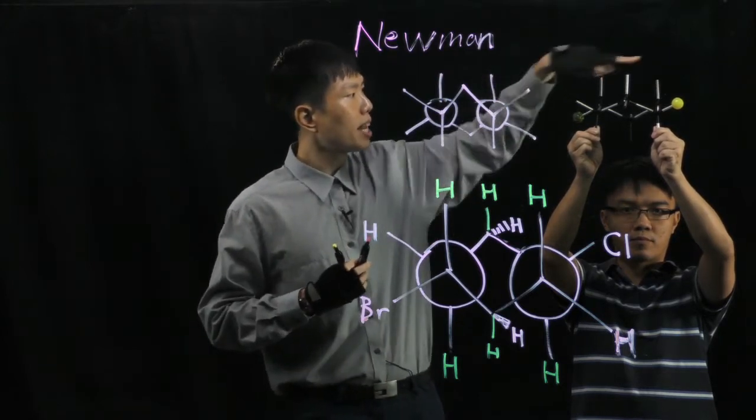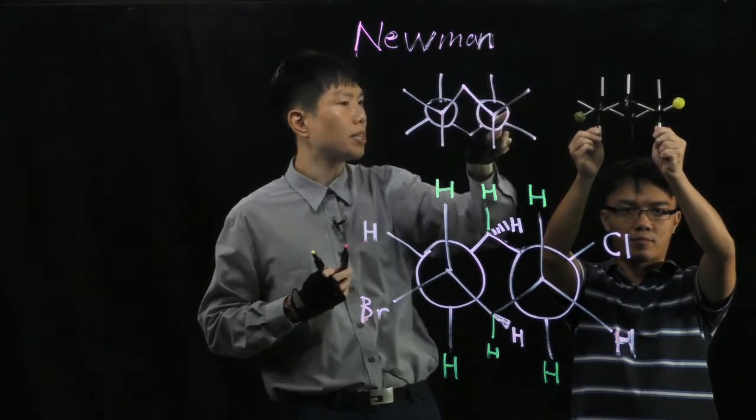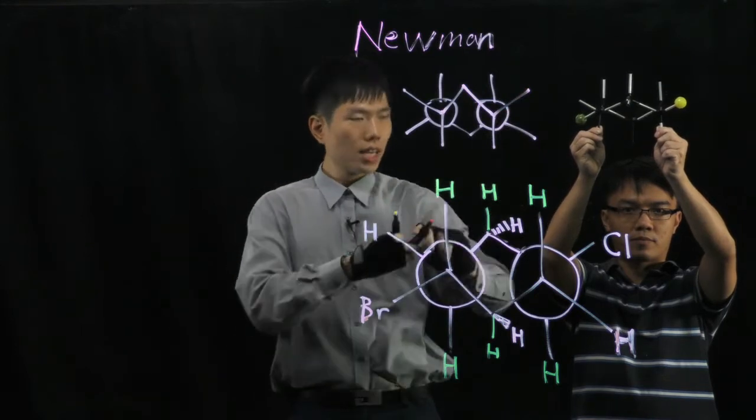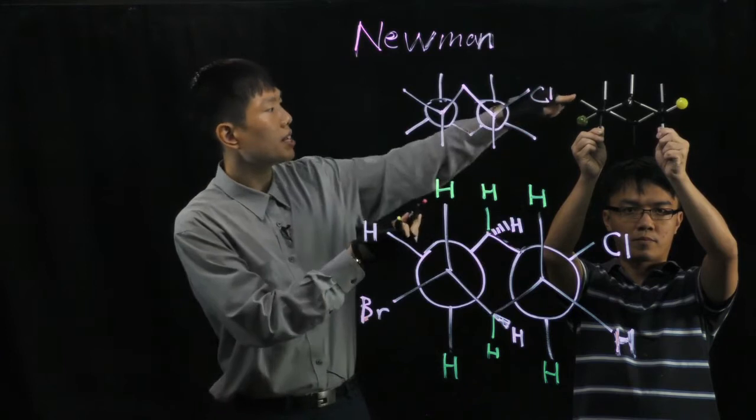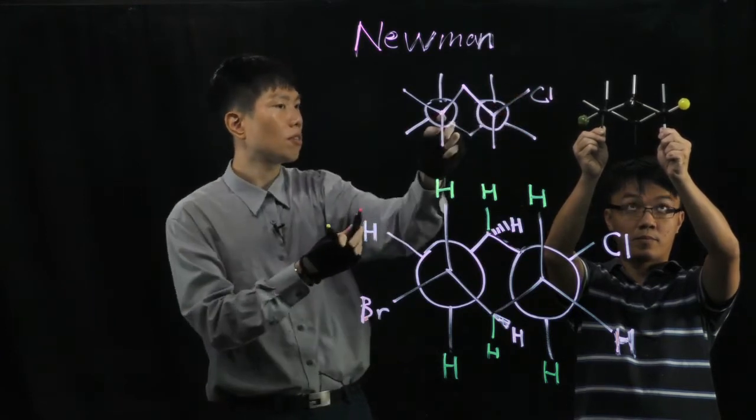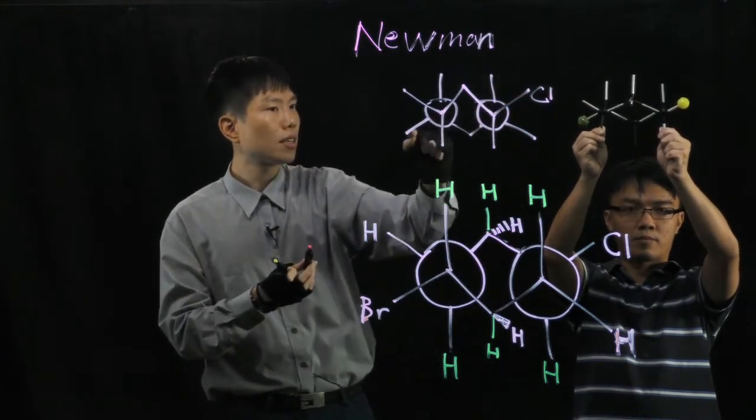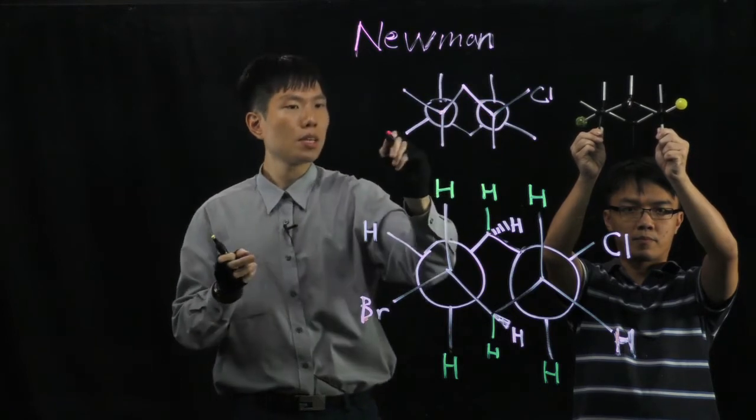Let's fill in the atoms. The chlorine right now is pointing sideways again, but at the front carbon. So Cl is right here. And where's the Br? Br is at the back carbon that's hidden, on the other side.